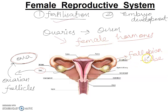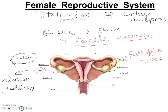There are two fallopian tubes, one on each side of the ovaries. These are not directly attached to the ovaries — they have a funnel-shaped opening. They receive the egg when it matures and carry it from the ovaries to the uterus.